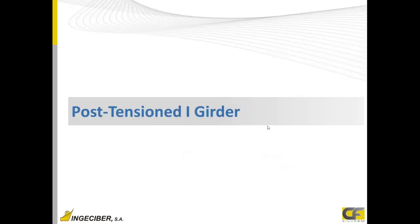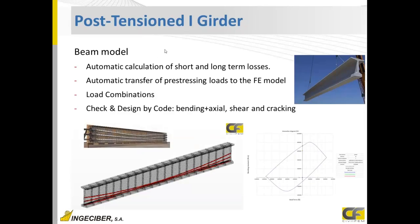The first example is a post-tension I-girder BIM model. We open it in CIVILFEM and view it — losses are calculated automatically and the equivalent pre-stressing forces are applied to the model. We combine these loads and check and design by code.